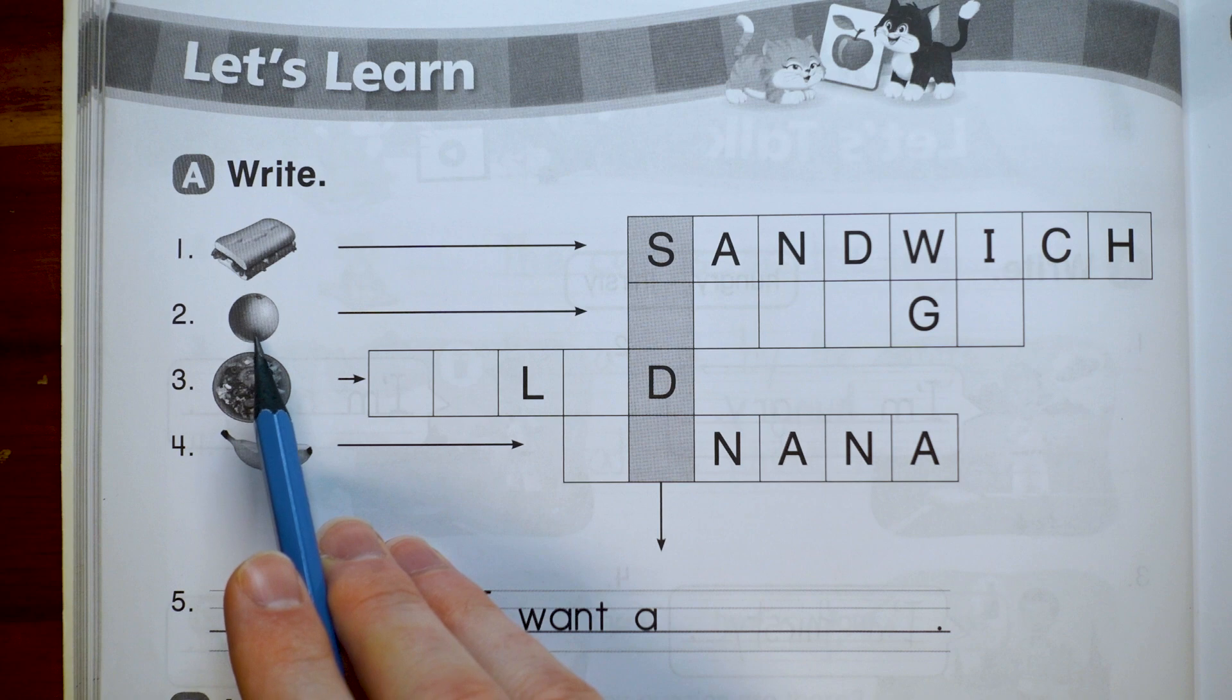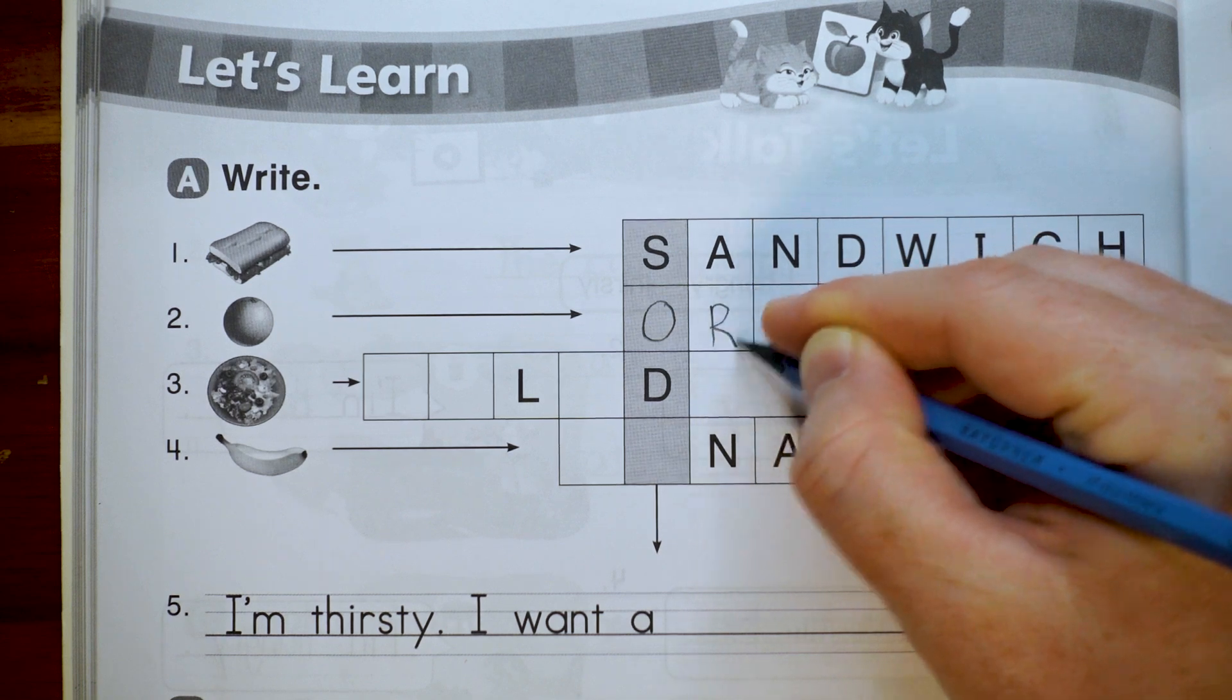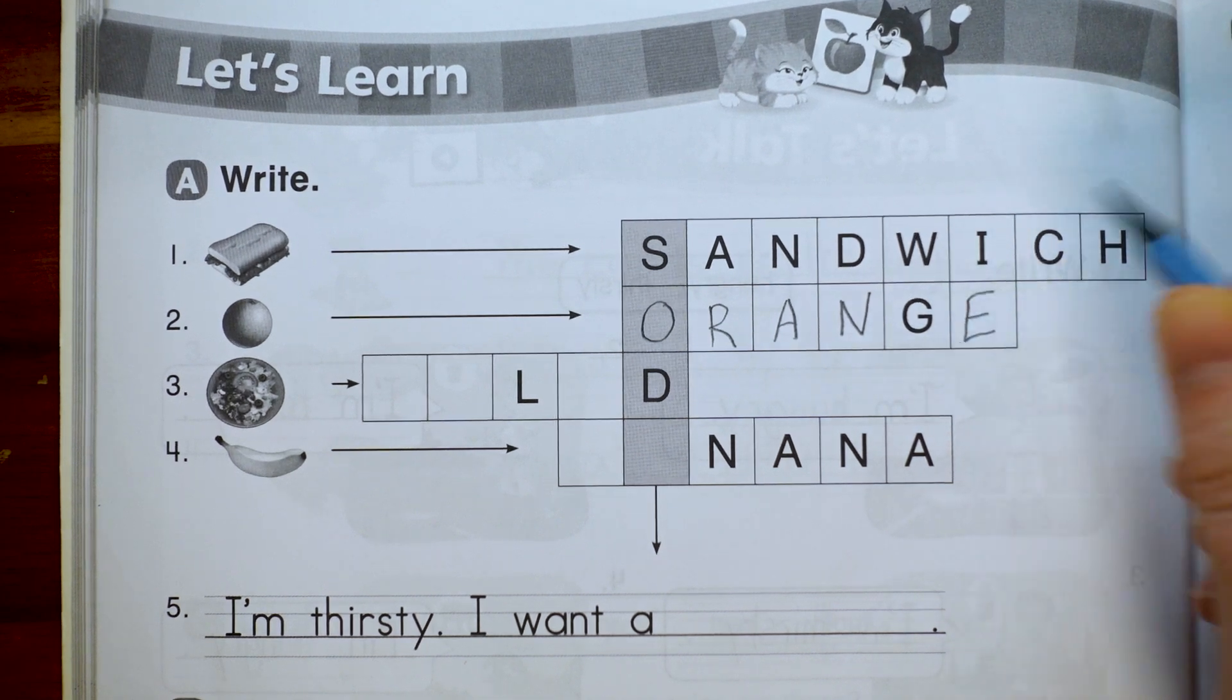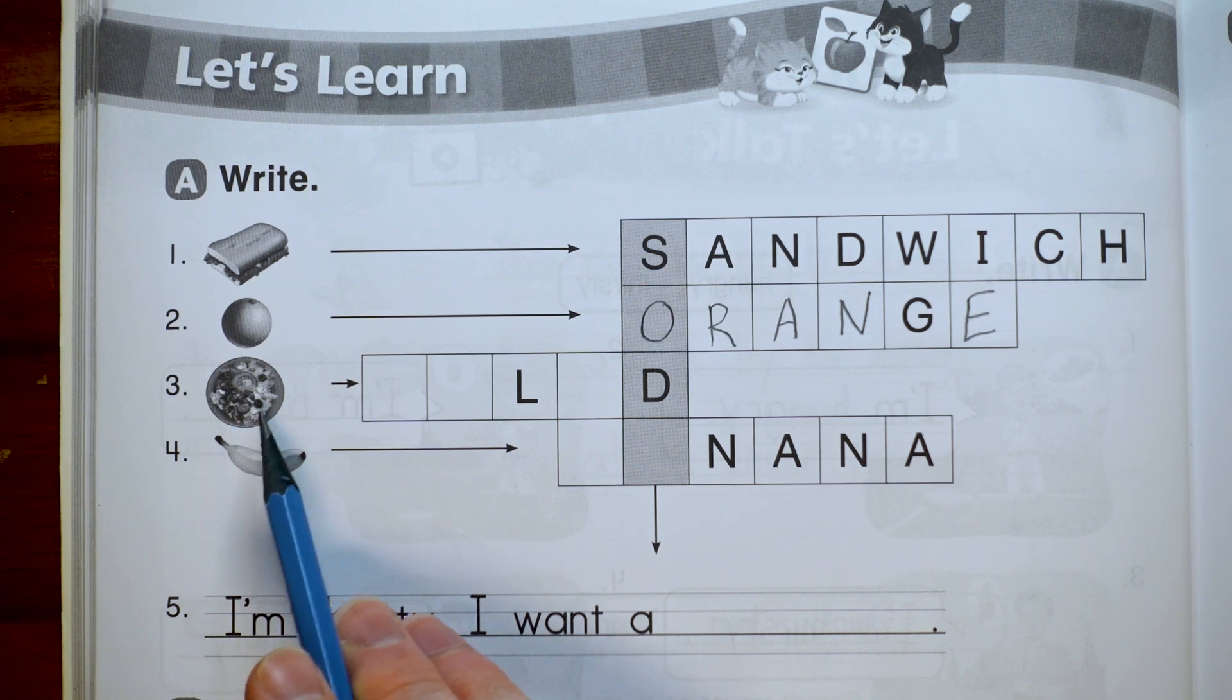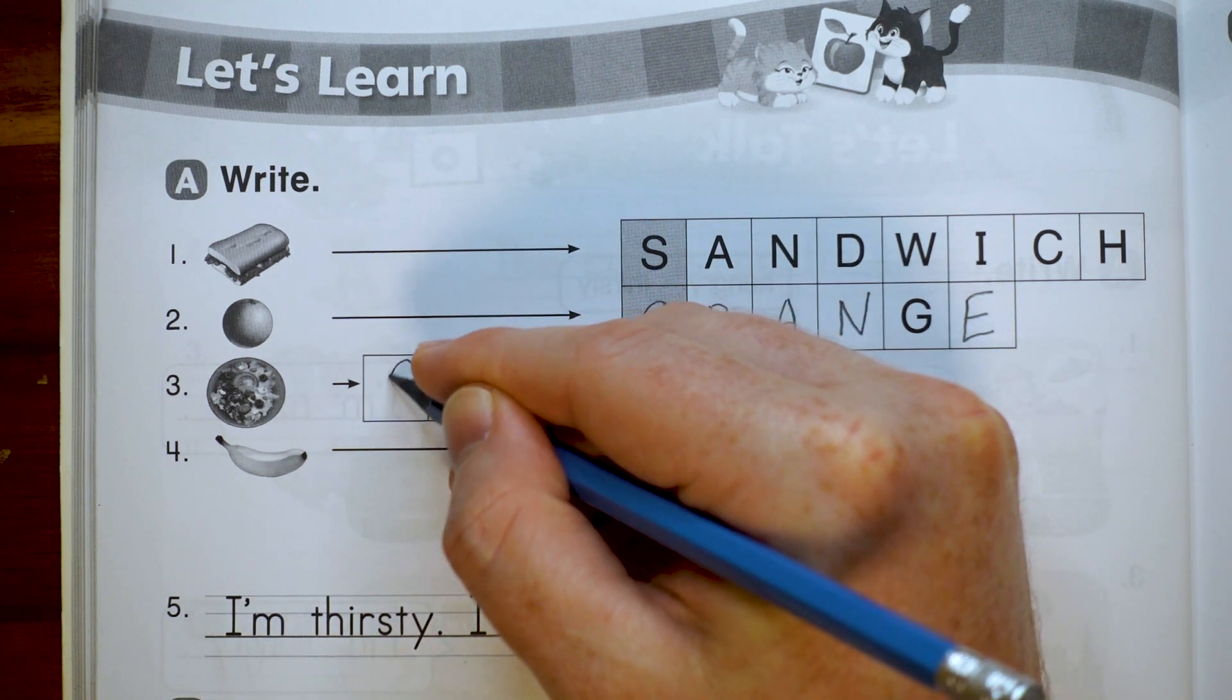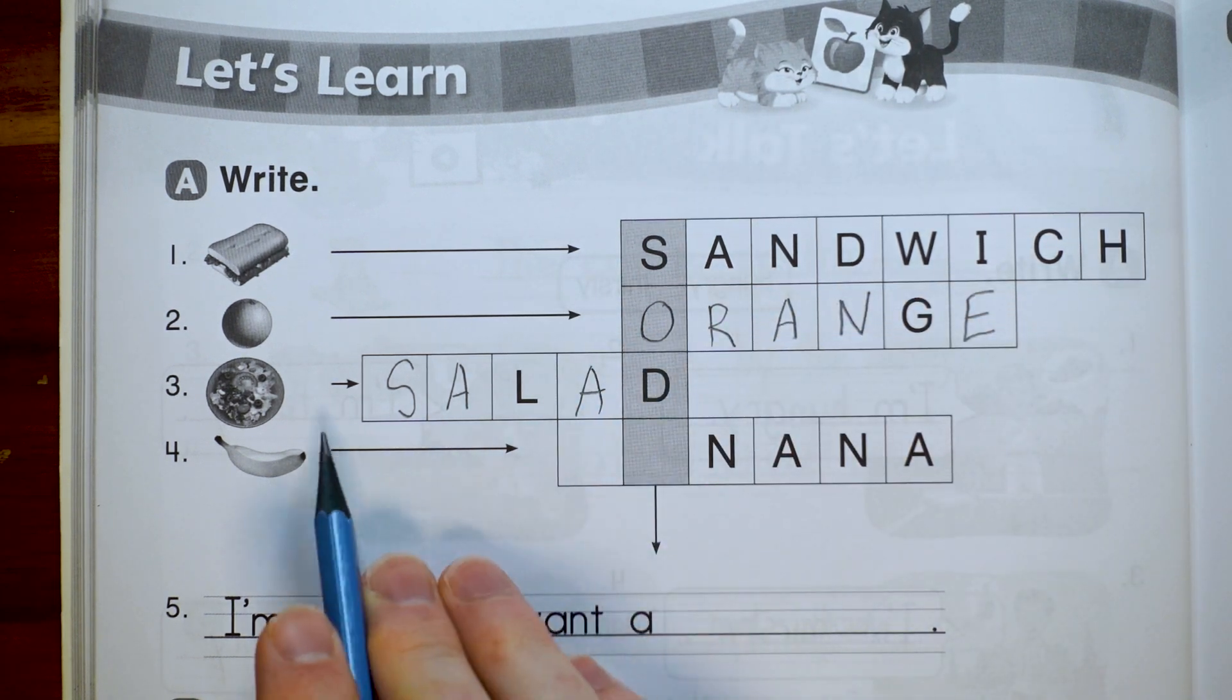Number two, what's this? Orange. Let's write orange. O-R-A-N-G-E. Orange. And number three, there's some lettuce and it looks like olives, tomatoes. So this is a salad. S-A-L-A-D.